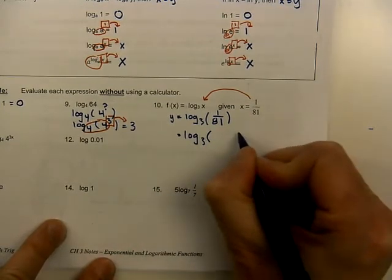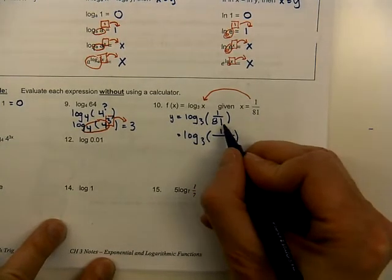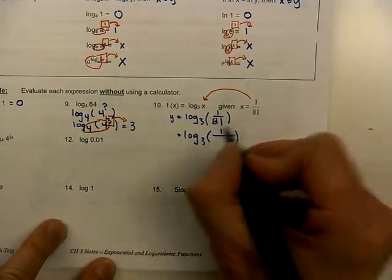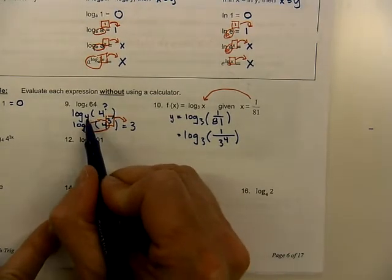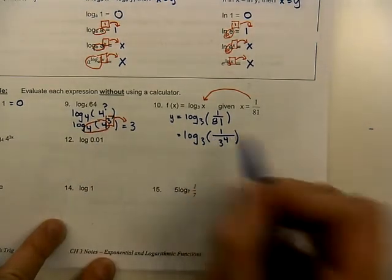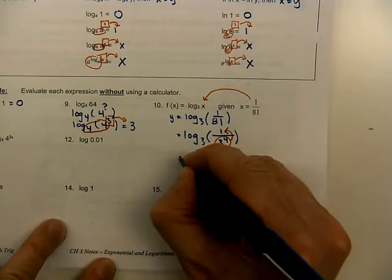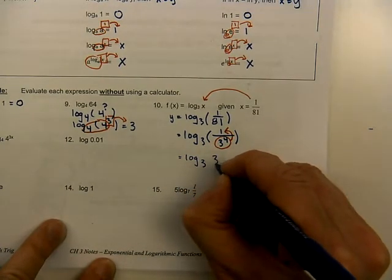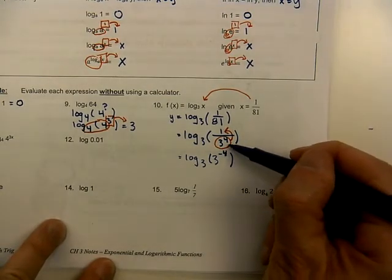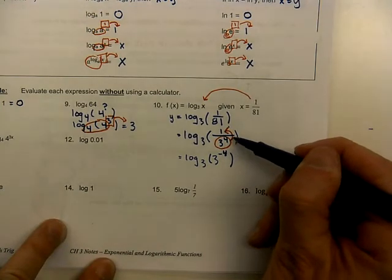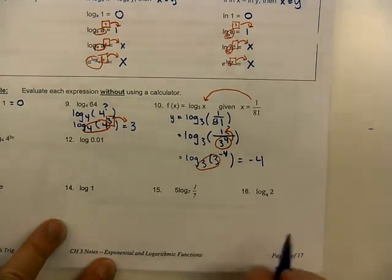So log base 3 of 1 over... the challenge is to take the 81 out. We know 81 is 9 squared, but 9 doesn't match the 3. We can factor each 9 into 3 times 3, so we really have 3 to the power of 4. We want a single base and a single value that is not a fraction. We have a fraction, so we take that denominator of 3 to the 4th and move it across the division bar — and anytime you do that, you change the sign on the exponent. So that becomes 3 to the negative 4. Now we have the pattern where the bases match, and so the result is negative 4.